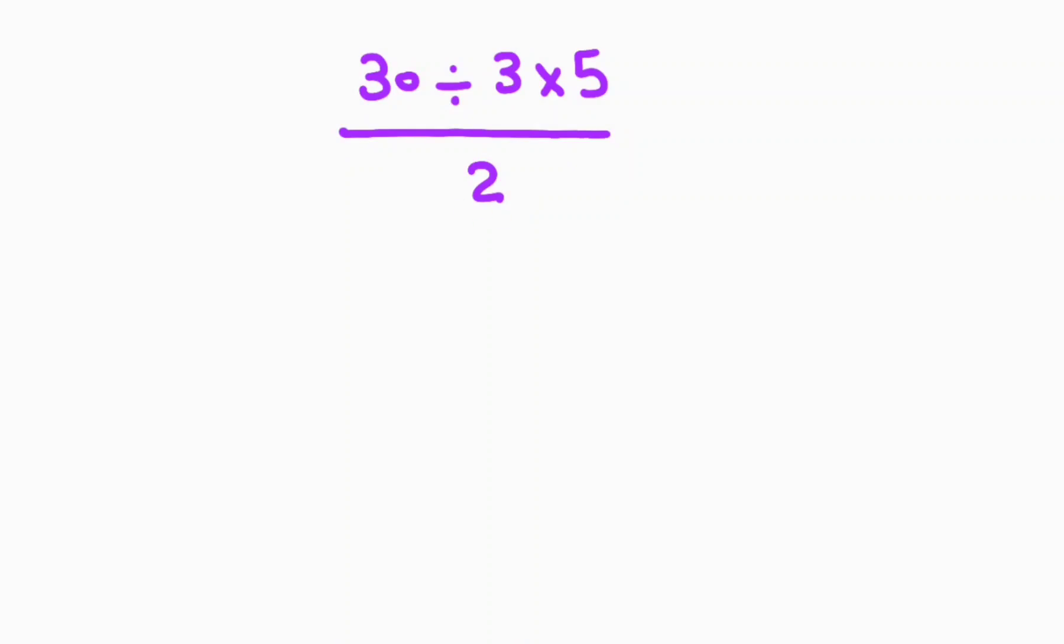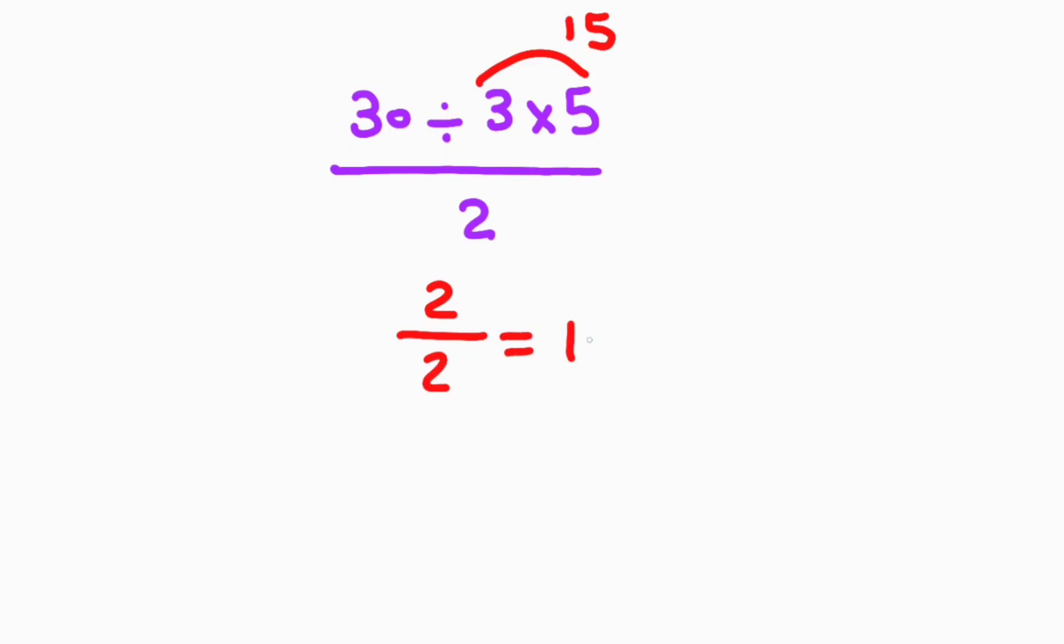Hey guys, and welcome to this video. Please subscribe to our channel. 30 divided by 3 times 5 over 2. Now, 3 times 5 equals 15. 30 divided by 15 equals 2. Now, 2 over 2 equals 1. But this...